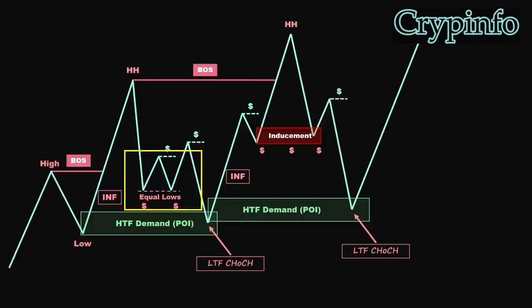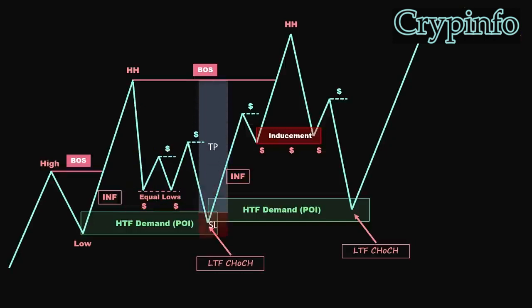Once we have received confirmation through the liquidity sweep, our next step is to see the price entering a higher time frame demand zone. As the price action is pulled into this higher time frame point of interest, we shift our focus to the lower time frame. Within the higher time frame POI zone, we look for a change of character in the lower time frame and identify a new point of interest. Once these conditions are met, we consider going long with our target set at the external liquidity, which corresponds to the swing high.